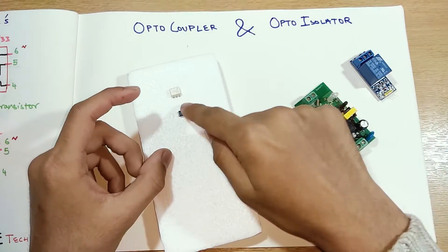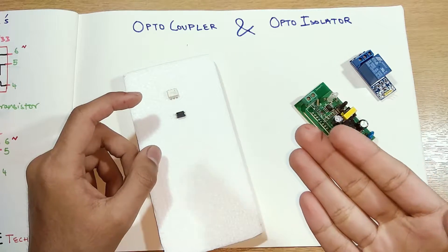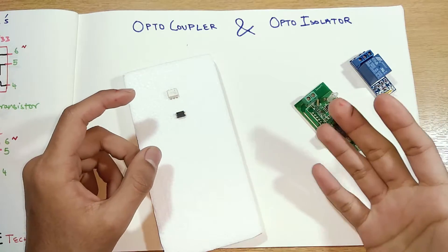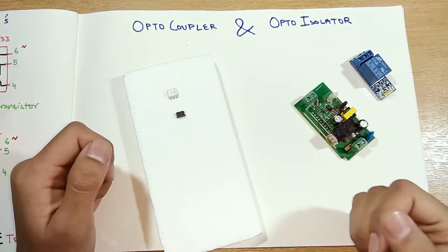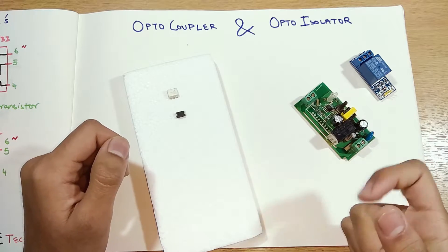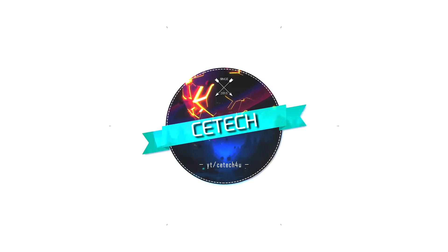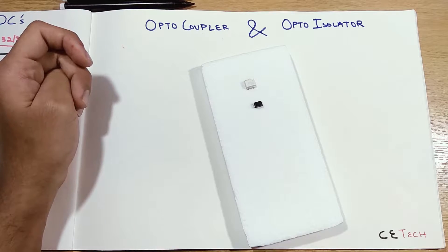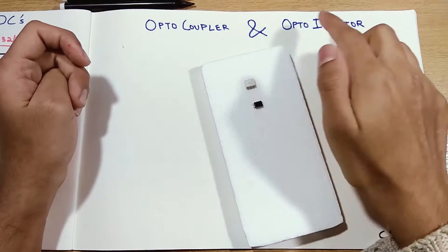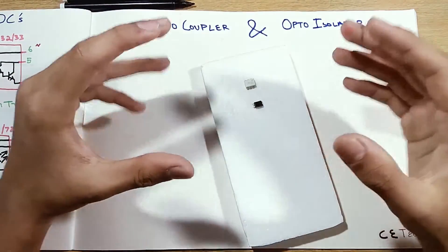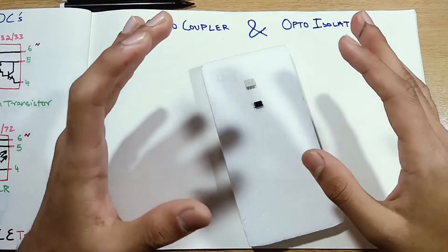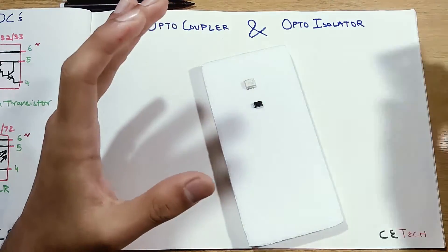We will see what these things do, the different types of optocouplers, the applications of optocouplers. We will also take a look at the specifications of different types of optocouplers. So let's get started. As the name suggests, the optocoupler or the optoisolator uses light for coupling or isolating two different circuits.